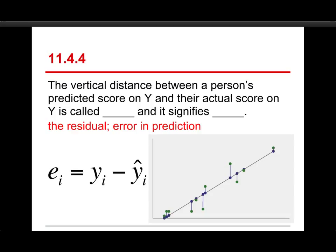You take their observed score, which is Y sub I, and you subtract their predicted score. And that's the caret, the hat over the Y, which means it's a predicted value. And that's the residual, just the difference between those two.